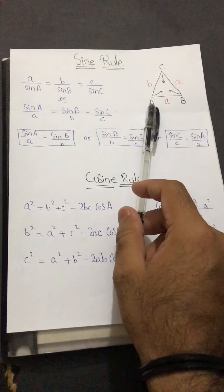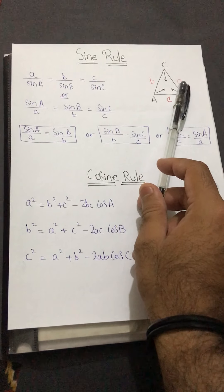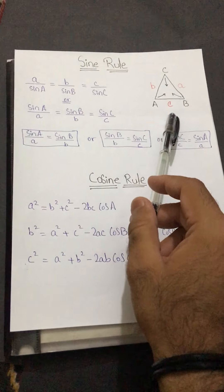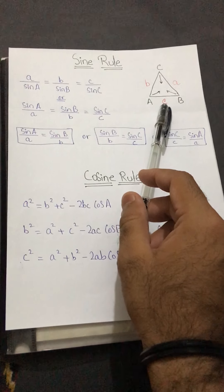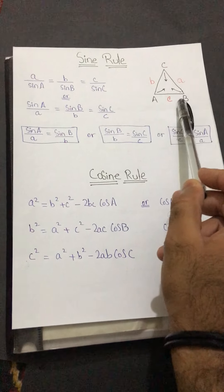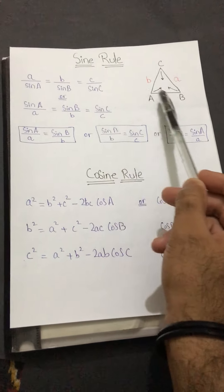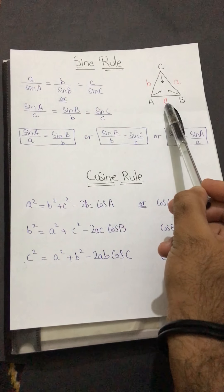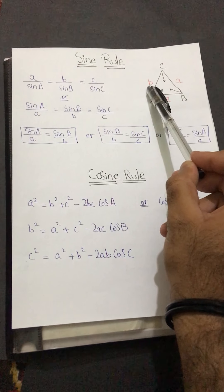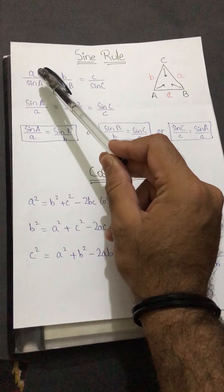If we have a triangle ABC, the side opposite to angle A is written as small a, the side opposite to angle B is written as small b, and the side opposite to angle C is written as small c. You can also use AB, BC, and CA, but in standard form: AB is written as c, BC is a, and CA is b.